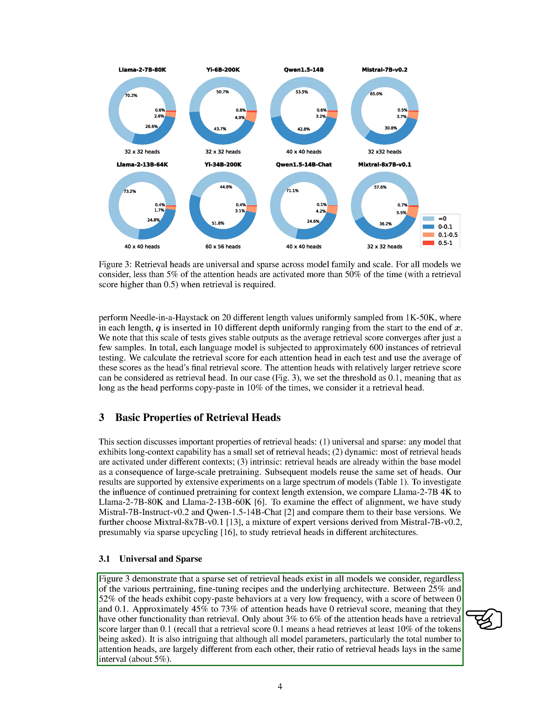Universal and sparse means that these models have a small set of retrieval heads that are activated under different contexts. These retrieval heads are already present in the base model due to large-scale pre-training and are reused in subsequent models. Our experiments on various models show that a sparse set of retrieval heads exists in all models, regardless of pre-training or architecture. Between 25% and 52% of the heads show copy-paste behaviors at a low frequency, while 45% to 73% have other functions besides retrieval.